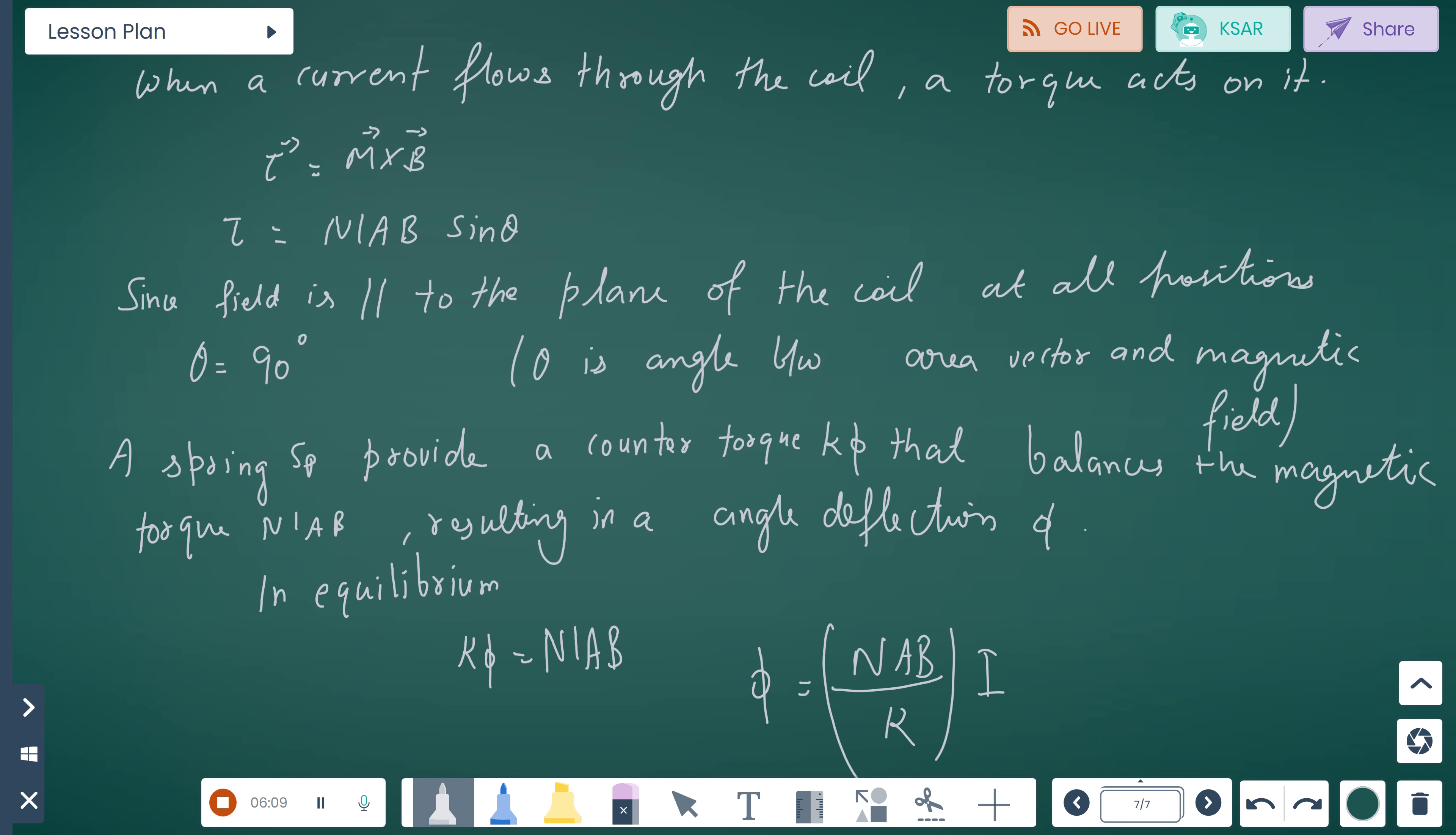When current flows through the coil, the torque acts. Then torque = M×B. Torque = NIABsinθ. Since field is parallel to the plane of the coil at all positions, so θ = 90°. Theta is the angle between area vector and magnetic field. So spring provides counter torque that balances the magnetic torque NIAB, resulting in angle deflection φ. Then at equilibrium, φ = NIAB. Then φ = (NB/K)×I.